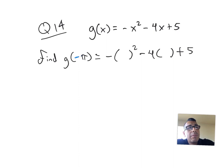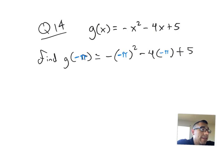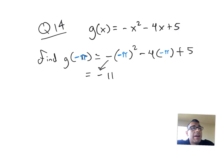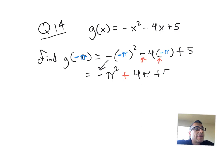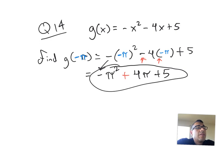Let's go ahead and plug in — I'll do it in blue so we can see the consistency. I'll plug in the negative pi there and the negative pi there. So that's what this function is saying to do. Now I evaluate. We end up with that negative — you just drop it down. When you square this negative, a negative times a negative, that's going to give you a positive. So we're just left with pi squared. We have this negative and this negative being multiplied, so it turns into a positive 4 pi. And nothing happened to that 5 — I just drop it down. So this is our answer.